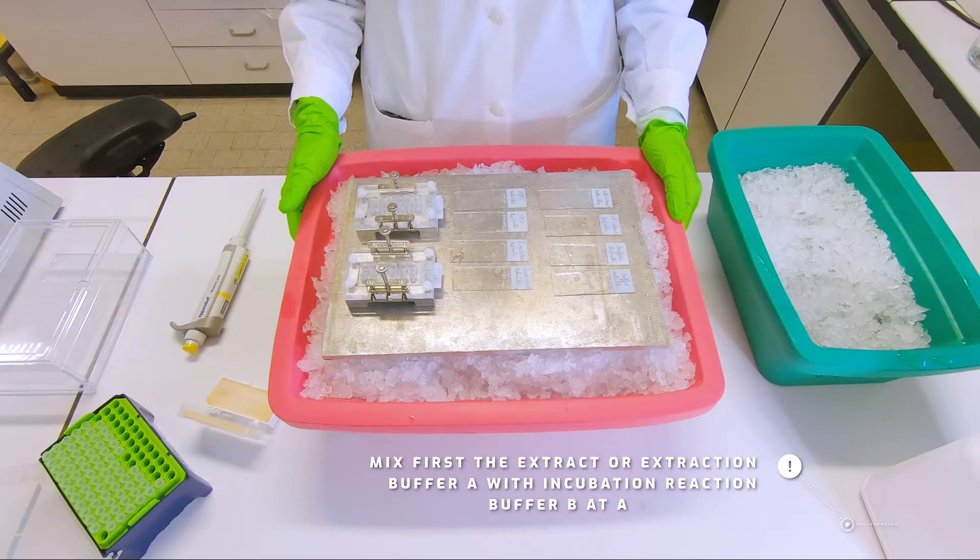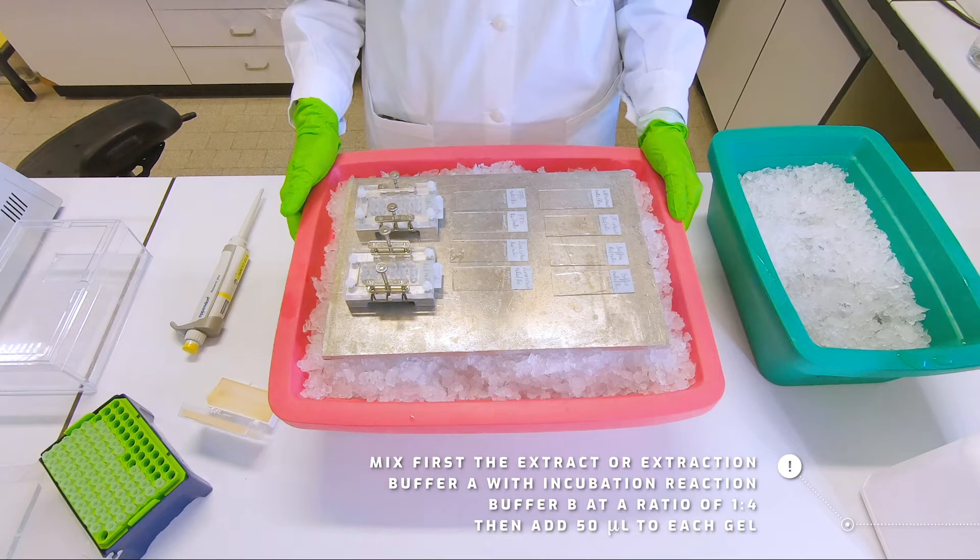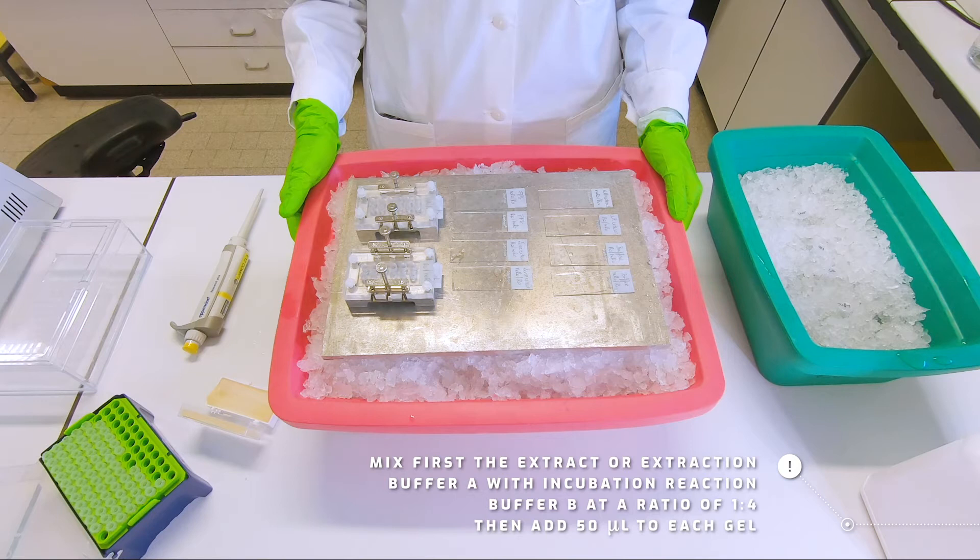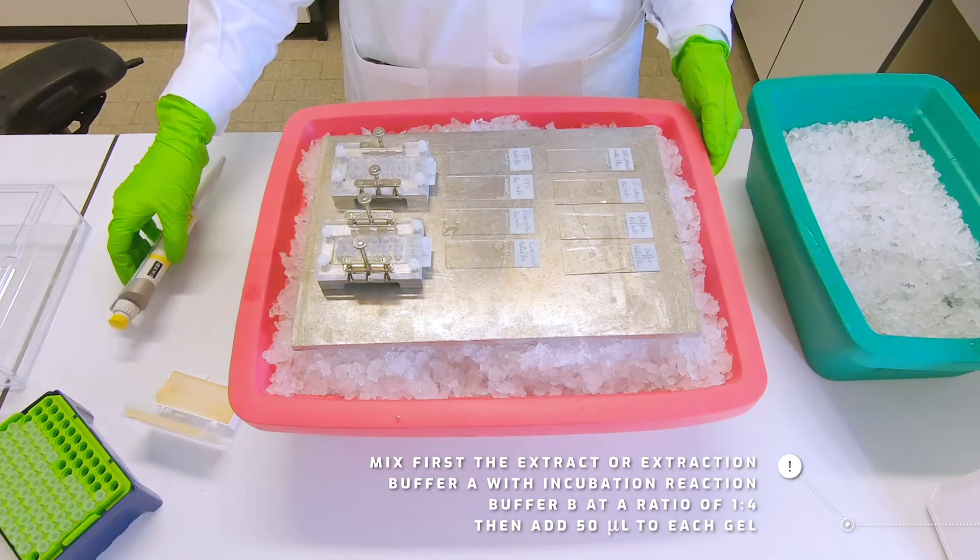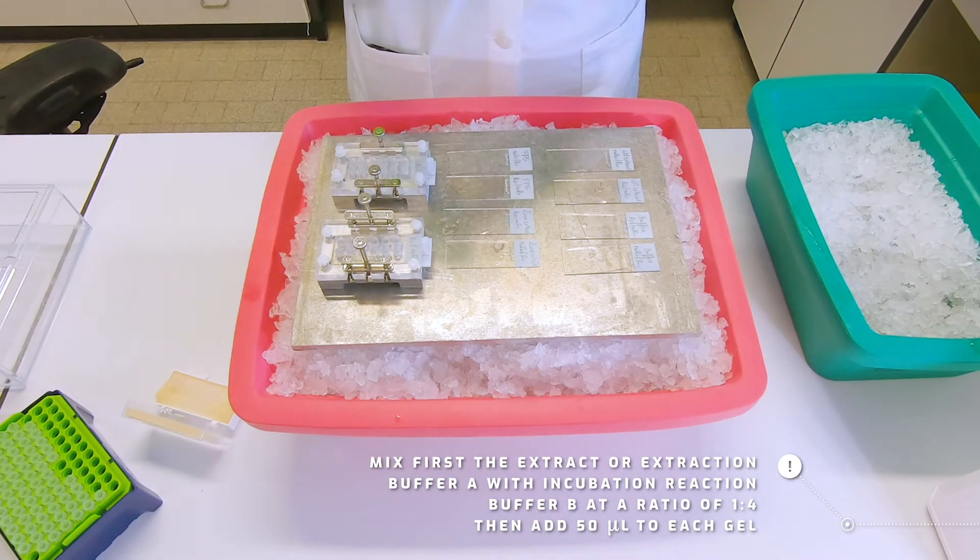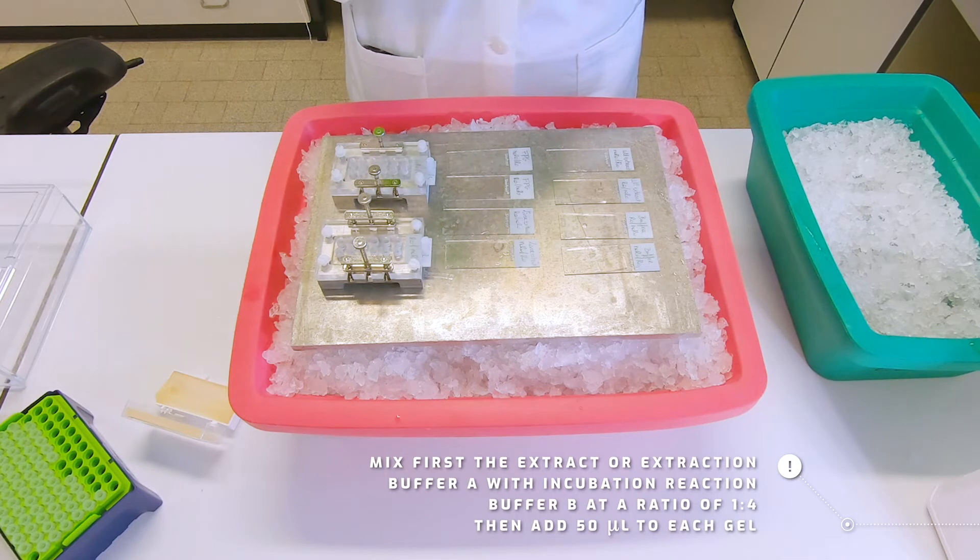Take care to first mix your extract or your control buffer in a ratio of one volume with four volumes of your incubation buffer B, and then from this mixture you add 50 microliters to each gel.